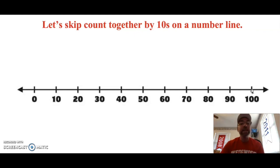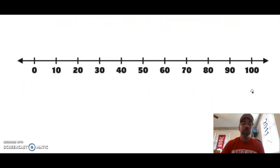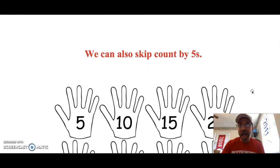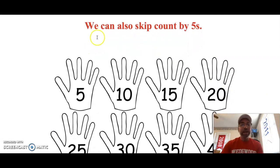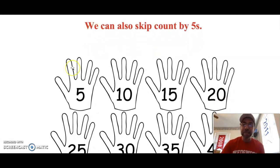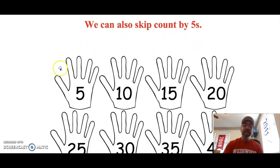We counted by ones and by 10s. Mathematicians can also count by fives. When we skip count by fives, it's like counting on our hands. My hand has five fingers, so when I count by fives I'm going like this — counting each hand's fingers together.